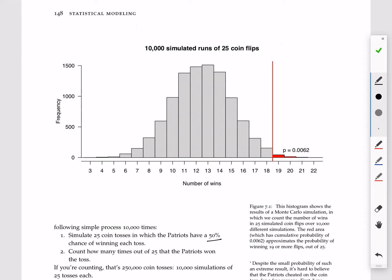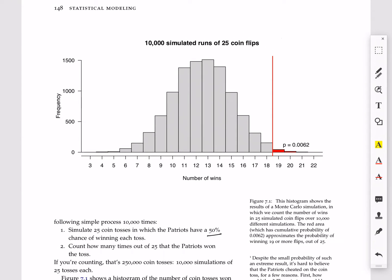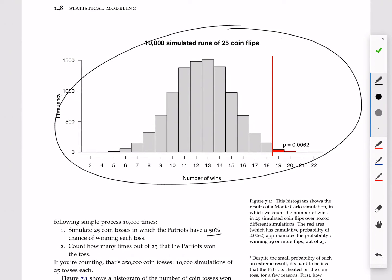And then out of that simulated set of 25 coin tosses, we just counted how many times out of those 25 the Patriots won the toss. If you're sort of counting up here, that's 250,000 coin tosses that went into making this histogram at the top of the page right here. That's 10,000 simulations of 25 tosses each.